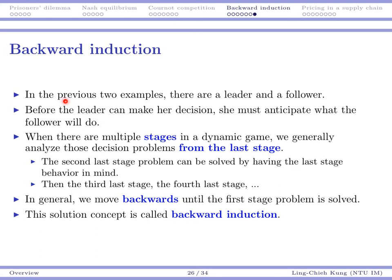So let's make a conclusion. In the previous two examples, there is a leader and there is a follower. Before the leader really makes her decision, the leader should anticipate what the follower will do. This is how the leader makes the decision. So in this case, we can solve this game by first making analysis on the second stage. In general, if there are multiple stages, we should try to analyze those problems from the last stage. We solve the last stage problem. And then we can take that as the input to solve the second last stage and so on. In general, we move backwards until the first stage problem is solved. And then we try to find an equilibrium path from the root to a leaf node. So that we may characterize what they will do in equilibrium. This solution concept is called backward induction.